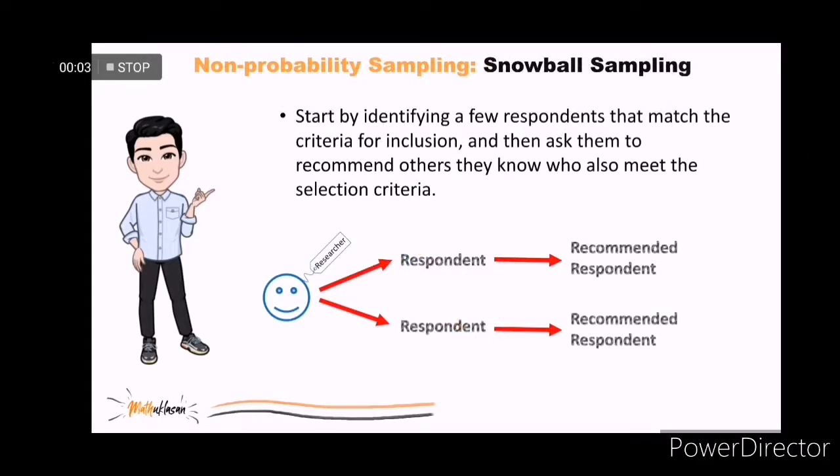In a snowball sampling, you start by identifying a few respondents that match the criteria for inclusion in your study, and then ask them to recommend others they know who also meet your selection criteria. Example: if you wish to survey computer network administrators and you know of only one or two of such people, you can start with them and ask them to recommend others who also do network administration.